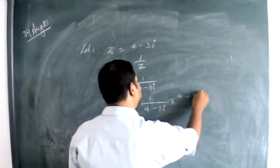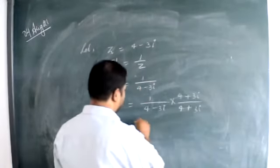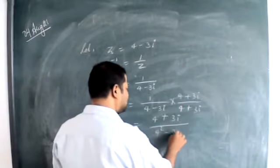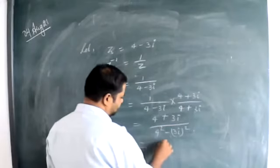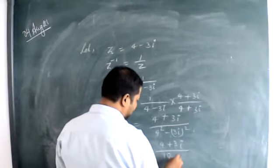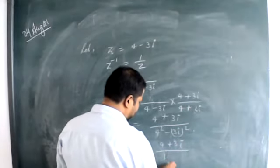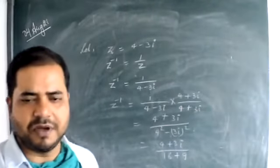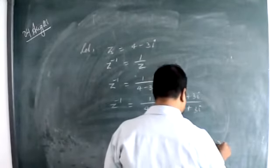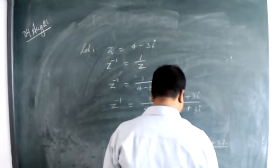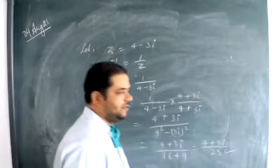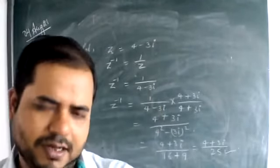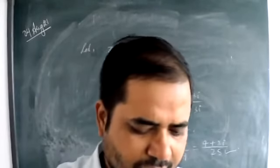Multiply numerator and denominator by the conjugate 4 plus 3i. So z inverse equals 4 plus 3i divided by 4 squared minus 3i squared. That gives 4 plus 3i divided by 16 plus 9, since i squared is minus 1, making the 9i squared term equal to positive 9. So z inverse equals 4 plus 3i over 25. This is the multiplicative inverse of the given complex number.